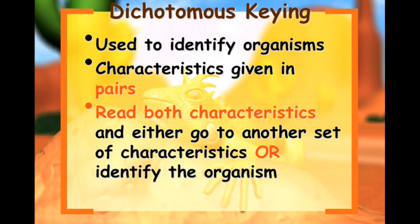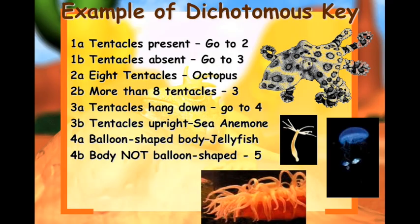A dichotomous key is used to identify organisms. Characteristics are given in pairs — you read both characteristics and either go to another set or identify the organism. You always start with 1A and 1B, read the statements, and it'll tell you where to go. It doesn't matter what picture you start with — you always go back to 1A and 1B, read the statements, and it'll tell you what it is.